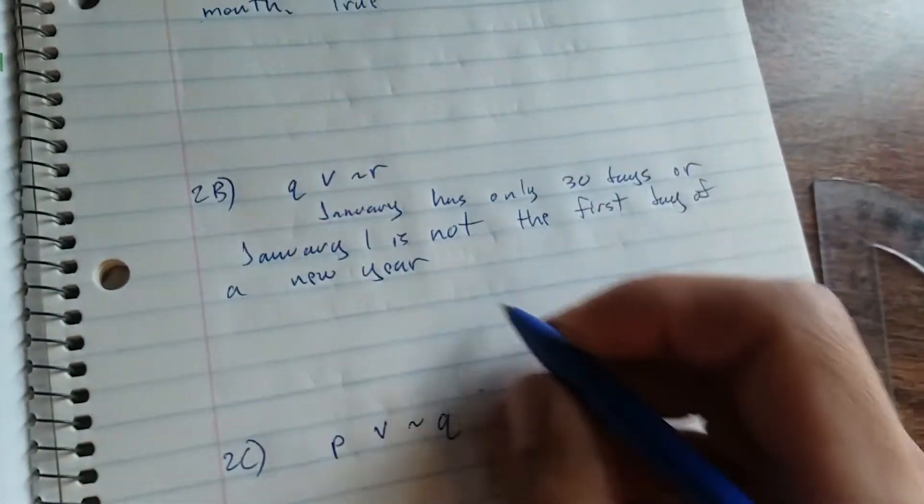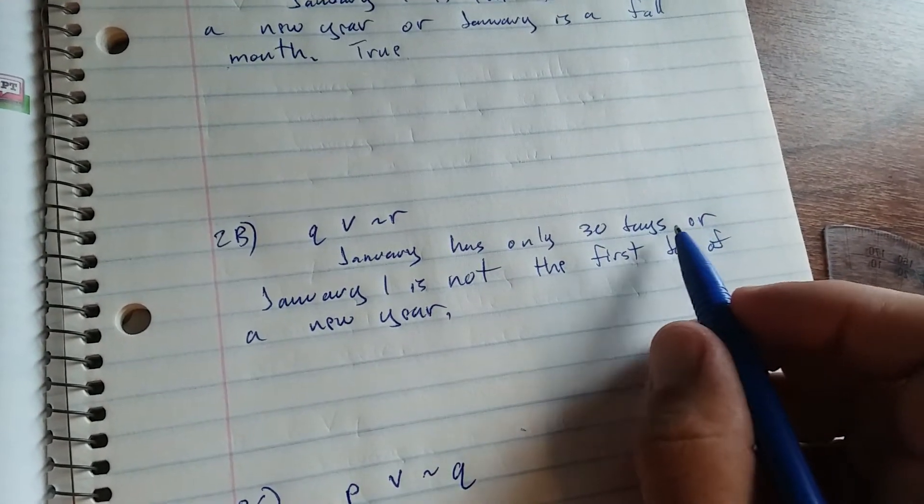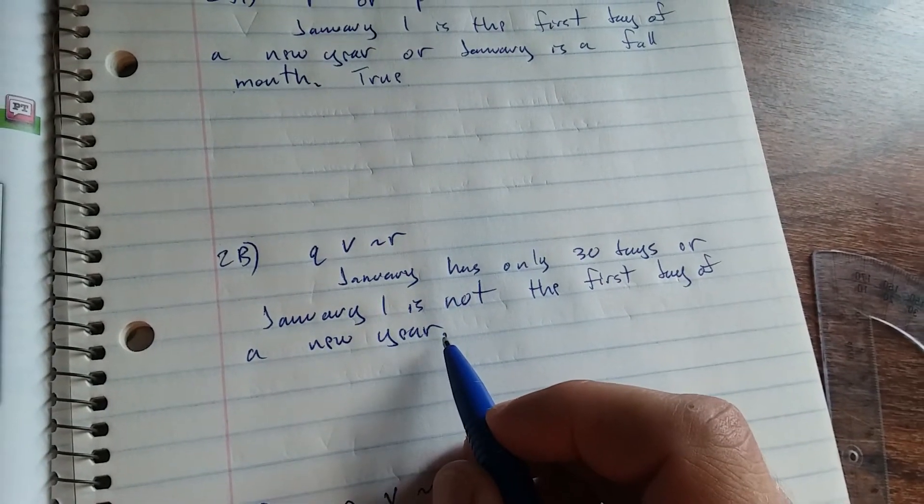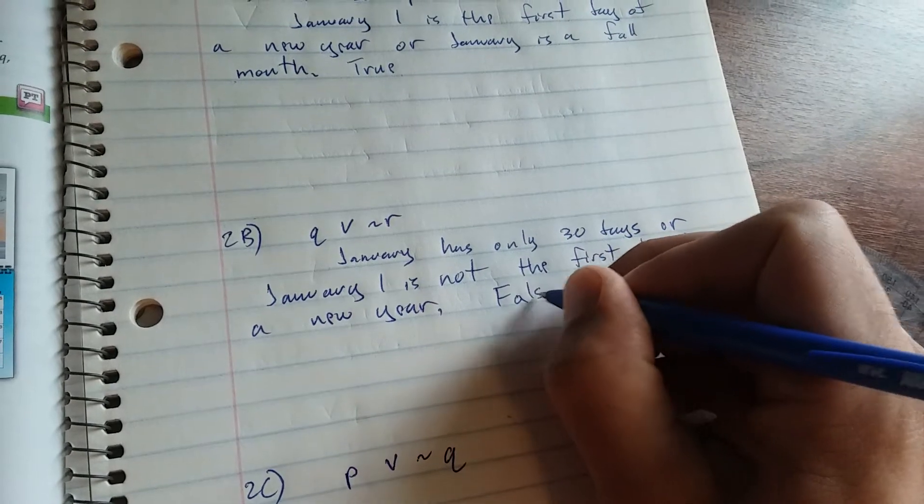So here we have January has only 30 days, which is false, or January 1st is not the first day of a new year, which is also false. So false or false makes this compound statement false.